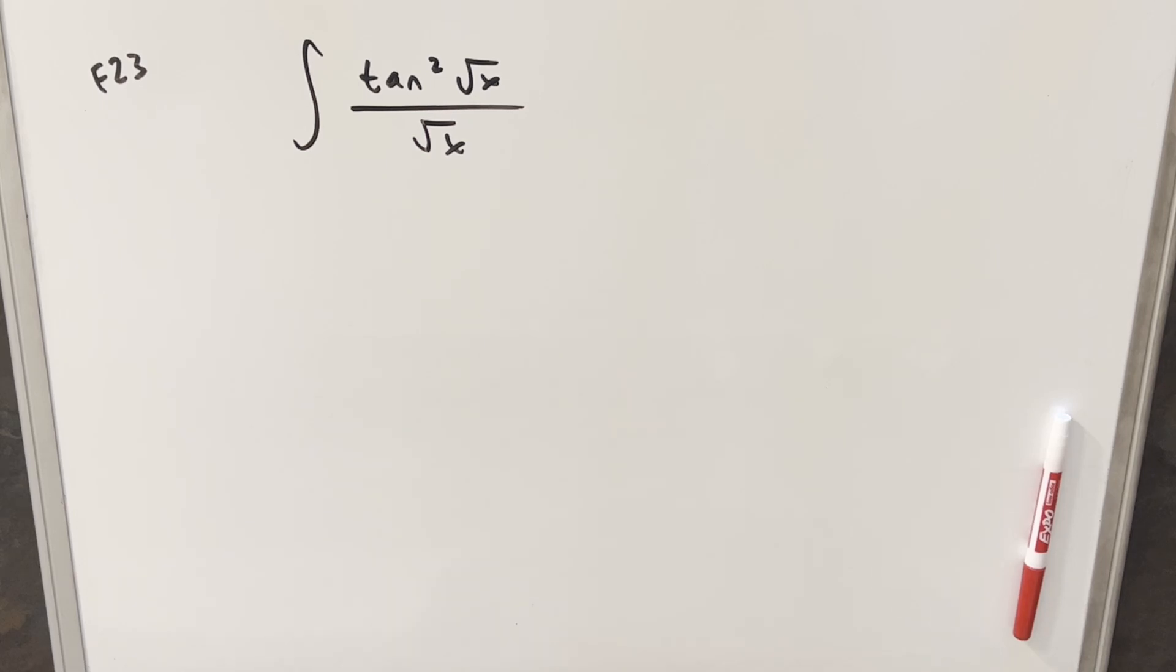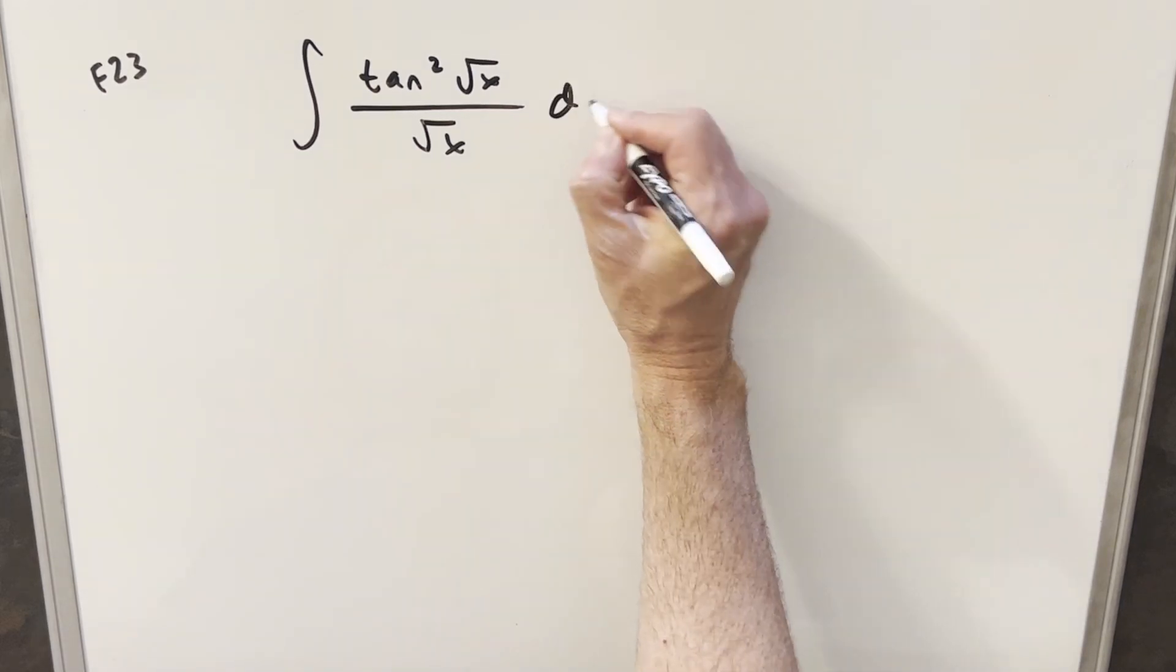Hey, we have here another integral from the Scranton integration. This is from 2017 finals, problem number 23. We have the integral of tan squared square root of x over square root of x dx.